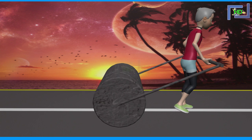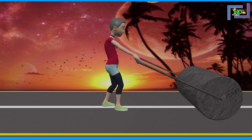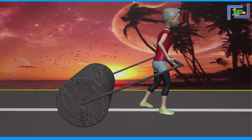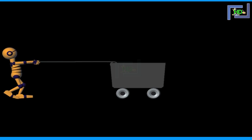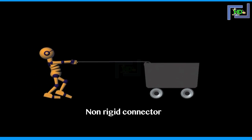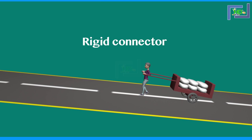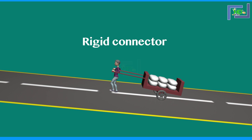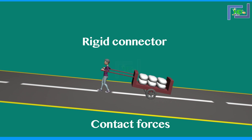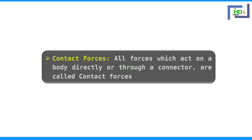These forces of pull or push directly act on a body or act through a connector which may be rigid or non-rigid. The force of push can act through a rigid connector only. However, the force of pull can act through a rigid or a non-rigid connector. For example, we can pull a cart by attaching a rope — a non-rigid connector — or a rigid handle. Forces which act on a body directly or through a connector are called contact forces.